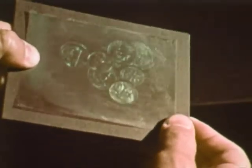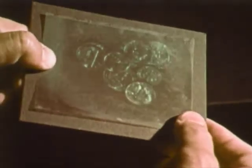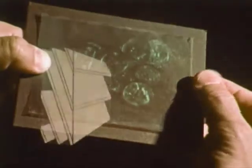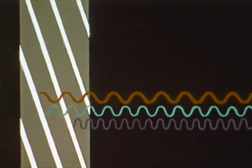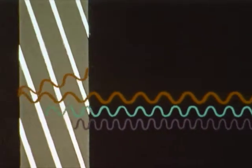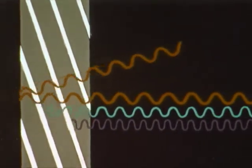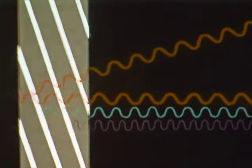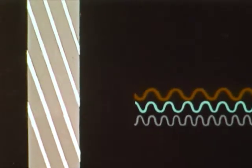Why does white light reconstruct this kind of hologram? A cross section of the emulsion looks like this. White light approaches and passes through the film. The mirror planes are spaced to reinforce only the wavelength used to make the hologram. Because the film shrinks in processing, the green color of shorter wavelength is reinforced rather than the red.